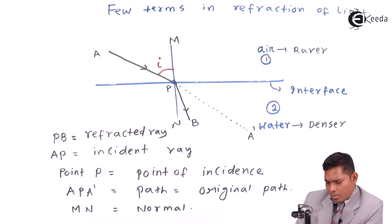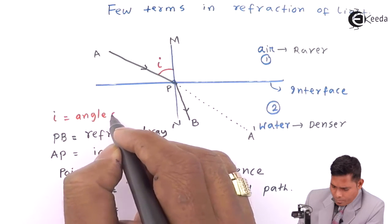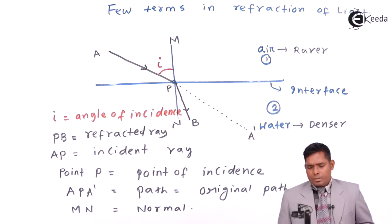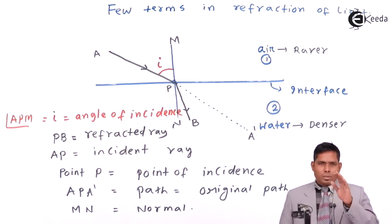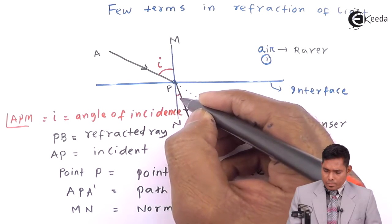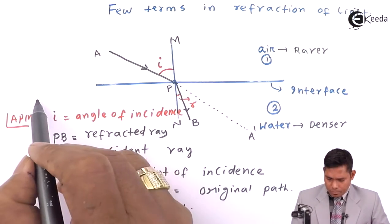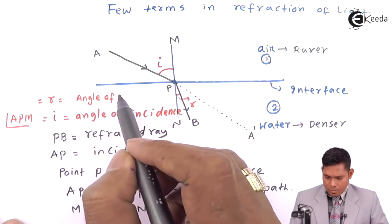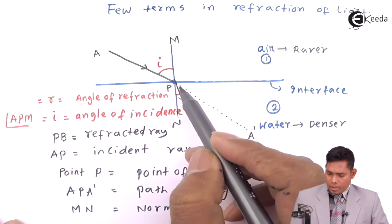We call this angle I — this is called the angle of incidence. The angle of incidence is the angle APM, which is the angle between the incident ray and the normal, not the incident ray and the surface. Similarly, this angle NPV is called the angle of refraction.